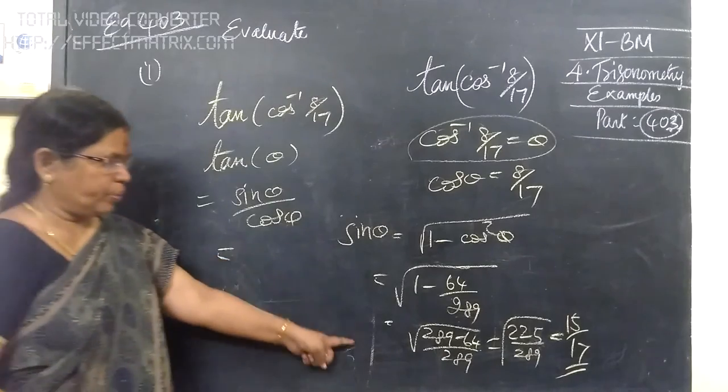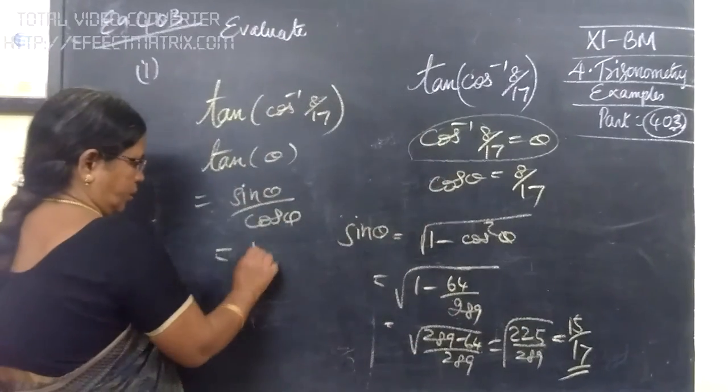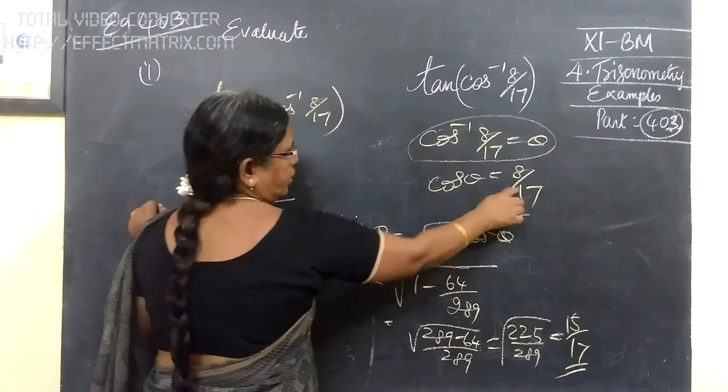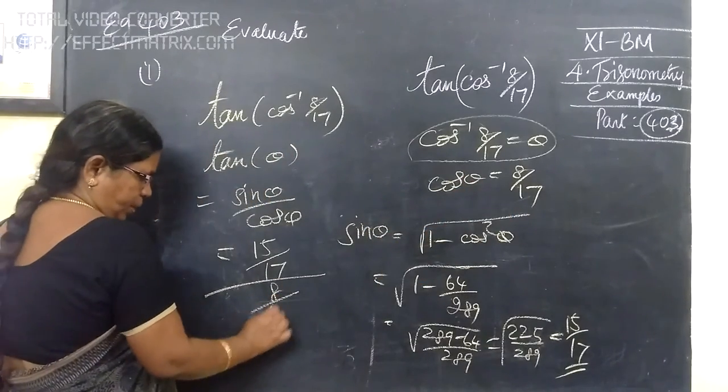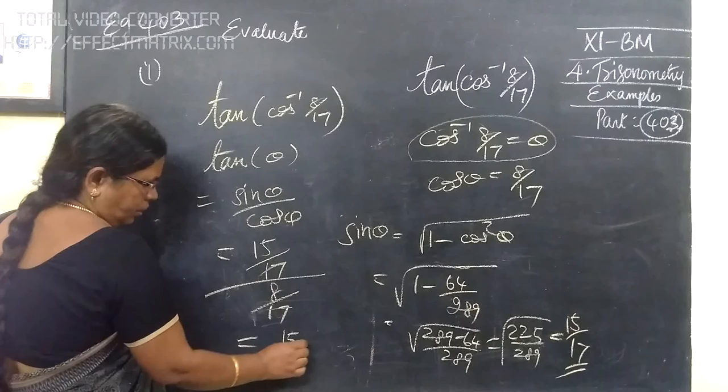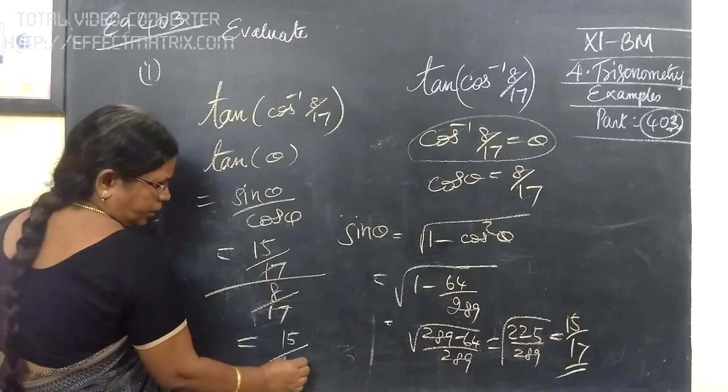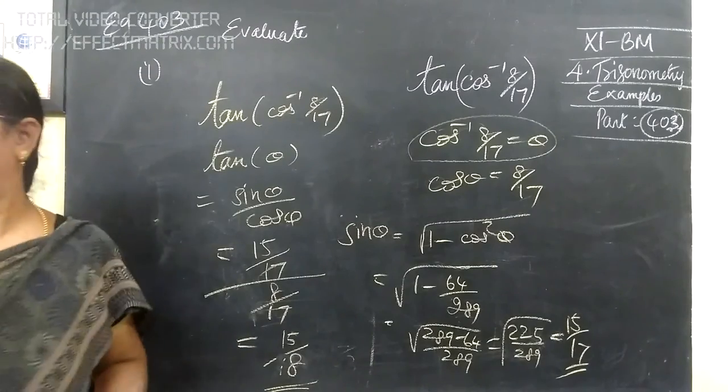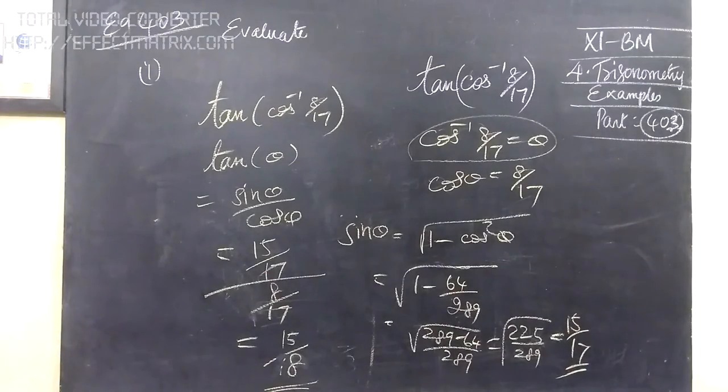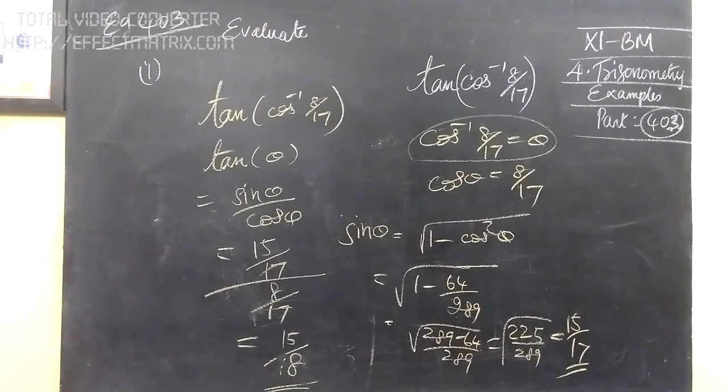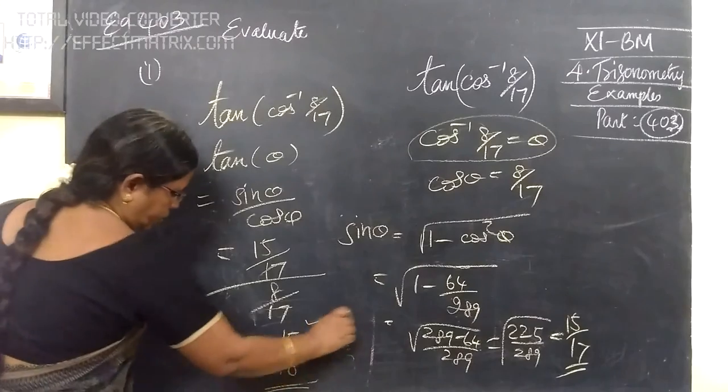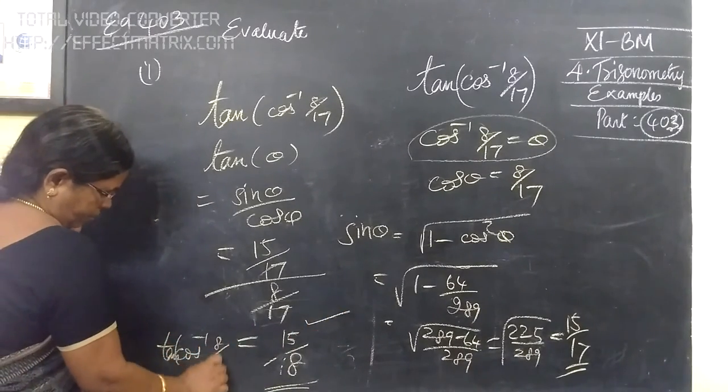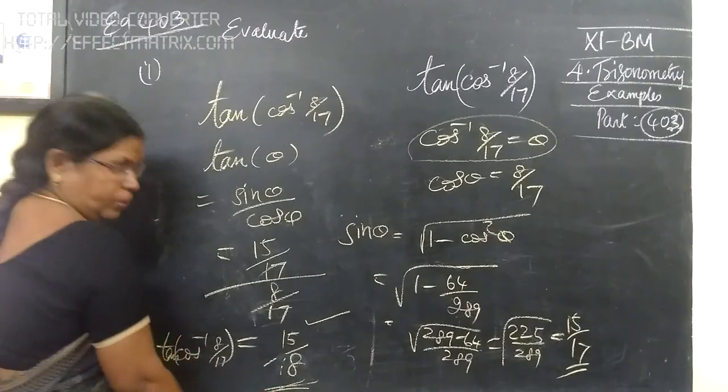So, it is tan theta. That is equal to sin theta which is 15 by 17 by cos theta which is 8 by 17. So, 8 by 17. So, the answer to this is 15 by 8. That's the answer. So, this answer is the final answer. Therefore, tan of cos⁻¹(8/17) equals 15 by 8.